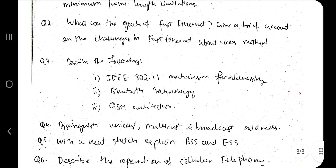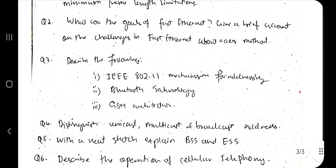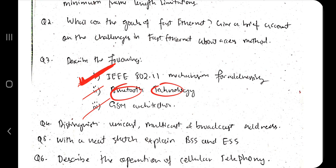Then we have: explain IEEE 802.11 — super, super important question. Make sure you know this very well. Study this first — this is a very, very important one. After that, go to Bluetooth and GSM. For Bluetooth technology, what are the different parameters, properties, and aspects of it?